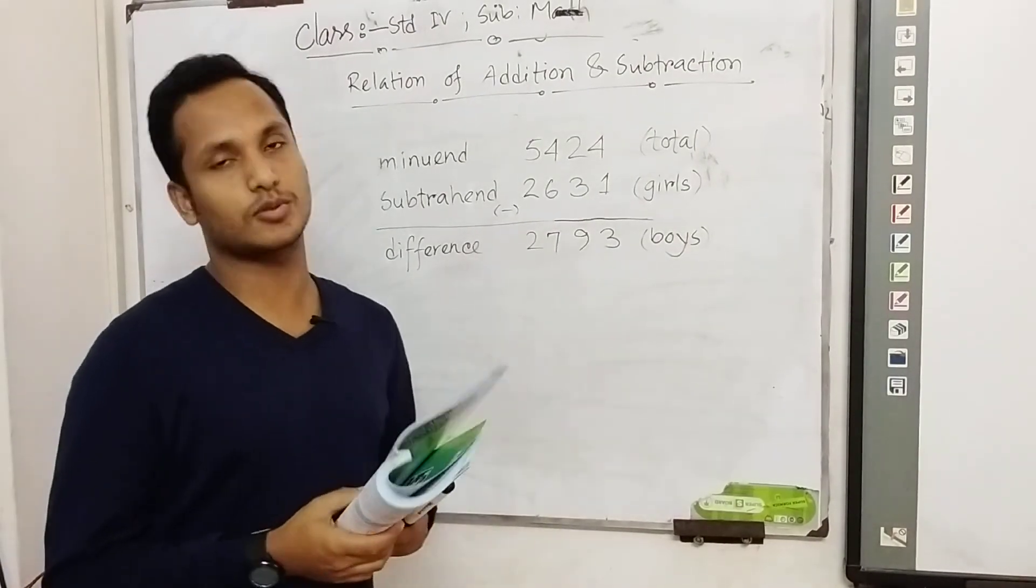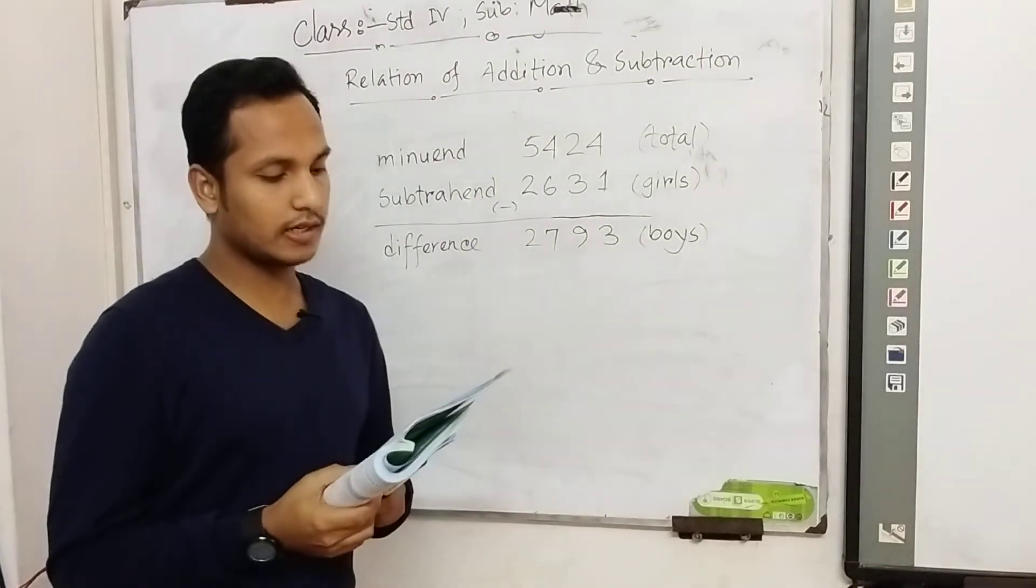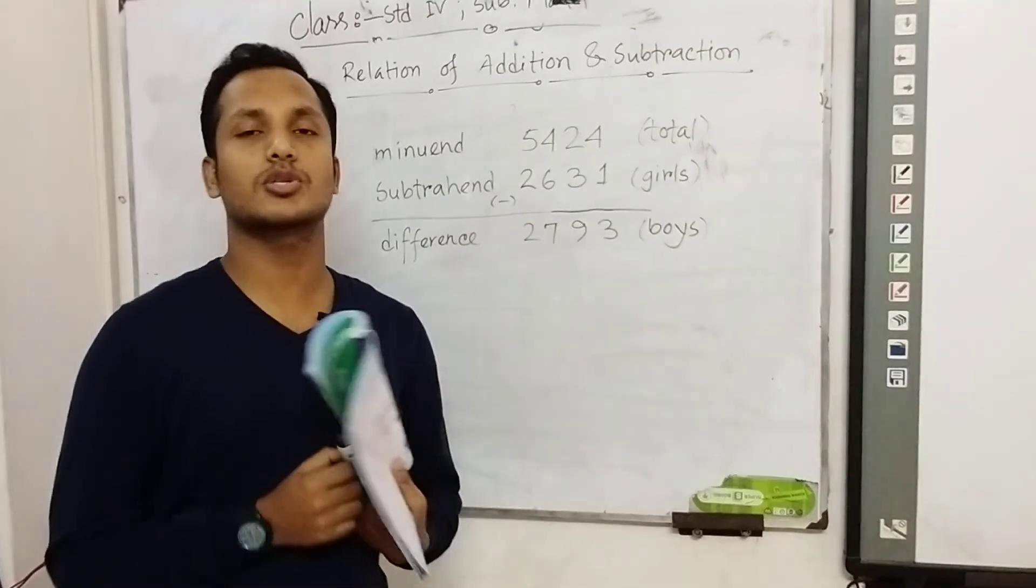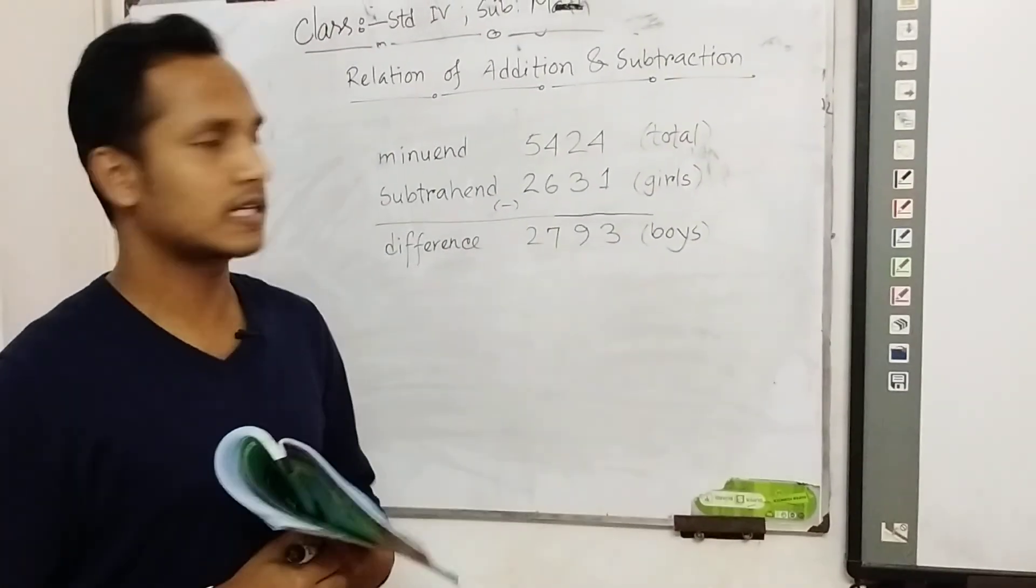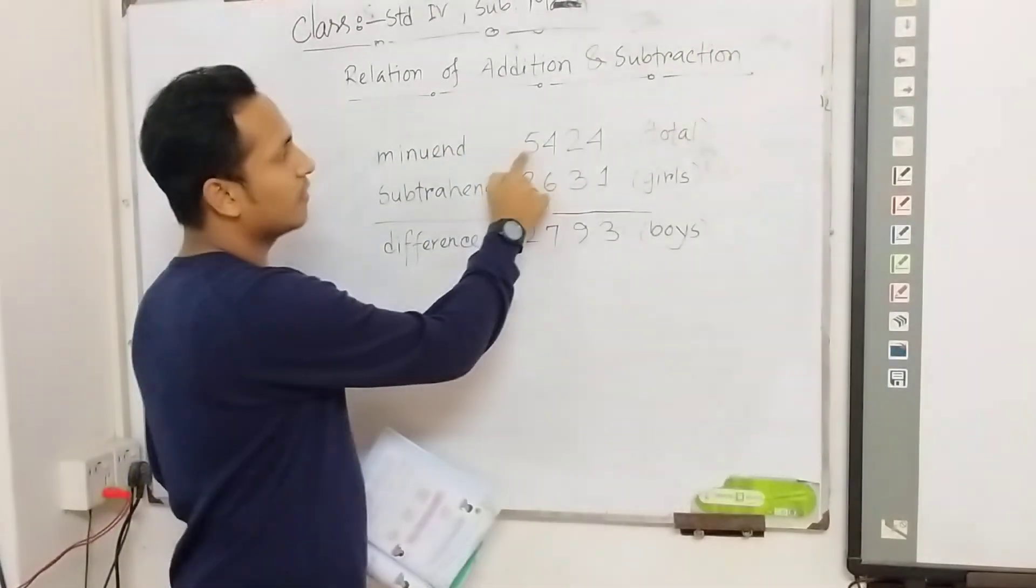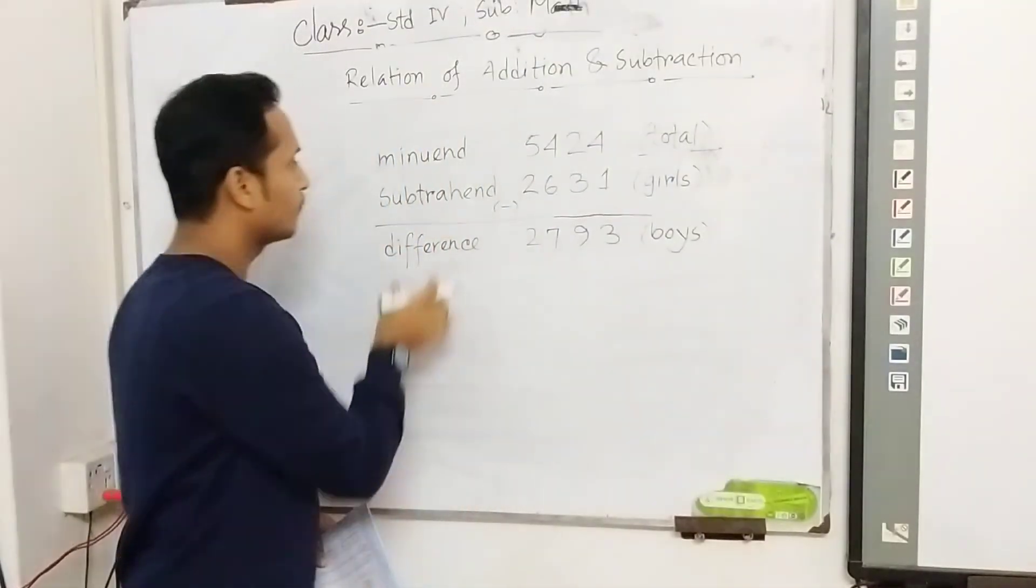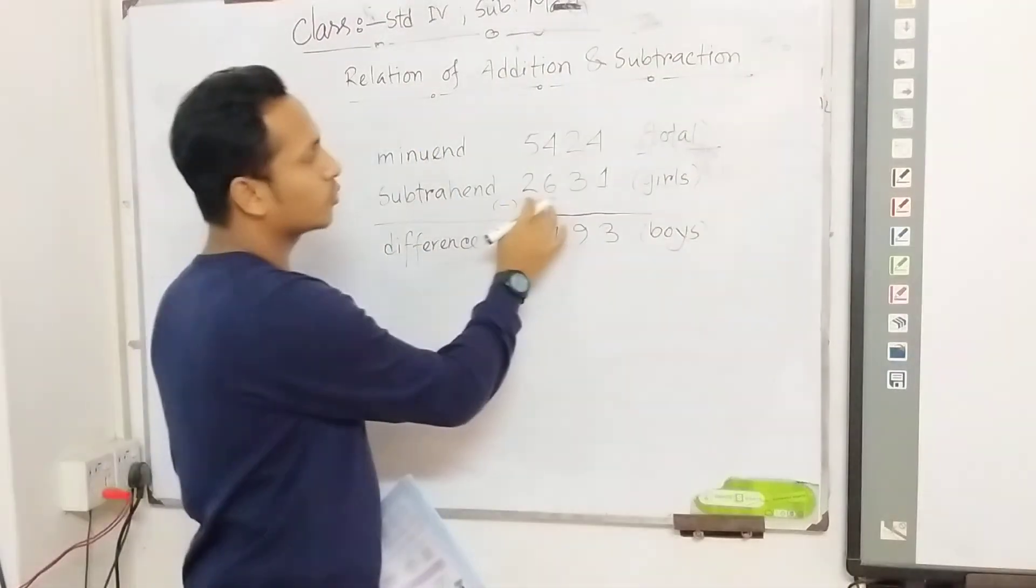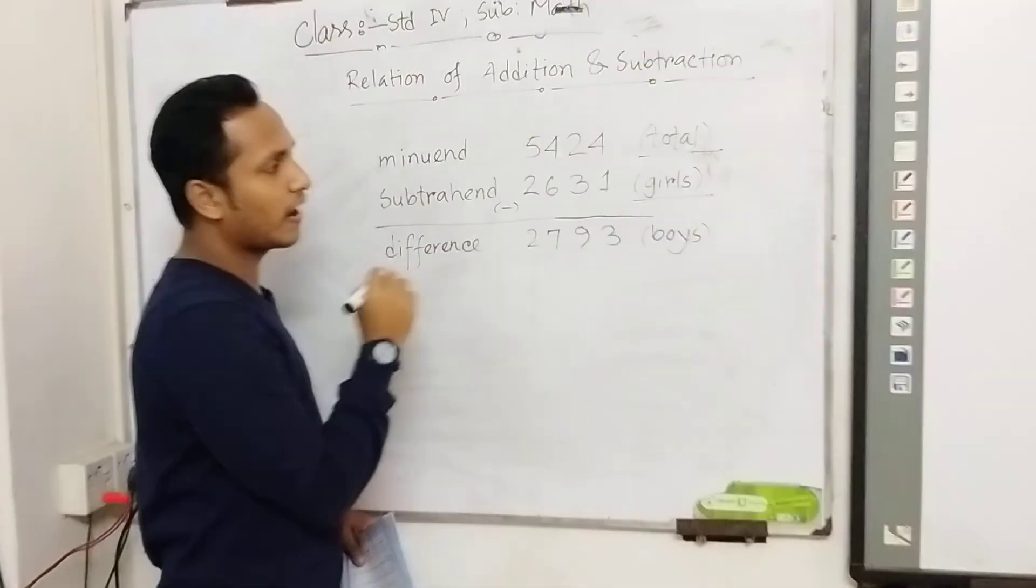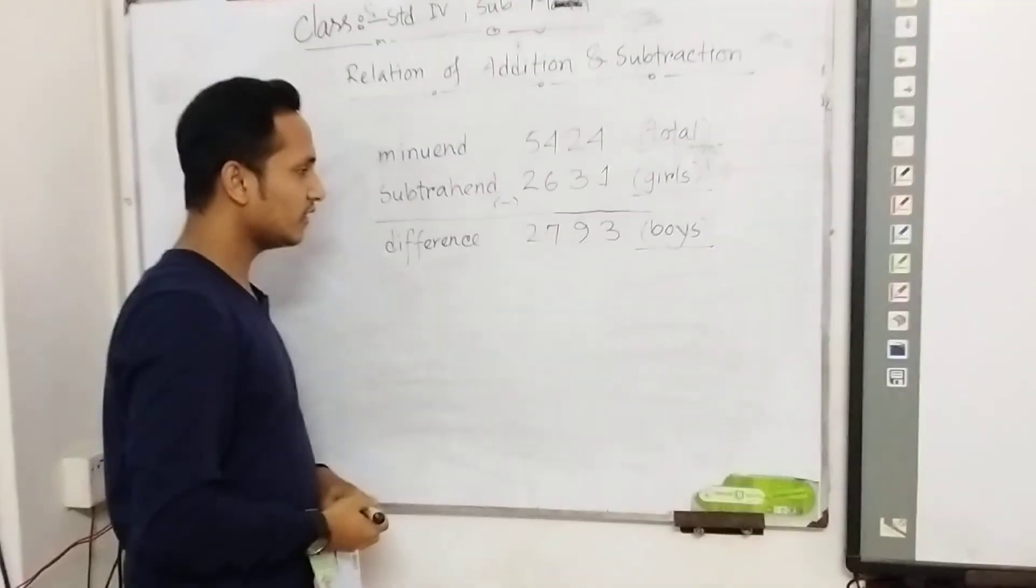That means total girls is 2,631. Now we have to find out total number of boys. So the difference will be here 2,793 total boys.